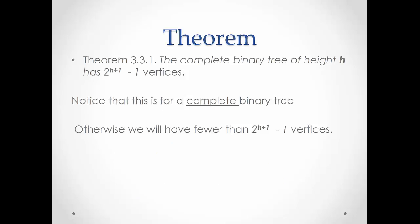The theorem that summarizes this is given in your book as Theorem 3.3.1: the complete binary tree of height h has two to the h plus one, minus one vertices. Again, it's h plus one because we start counting at level zero. Note that this is for a complete binary tree. If a binary tree is not complete, then we have at most two to the h plus one, minus one vertices.